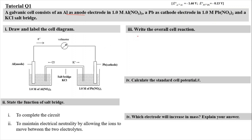For number three, we have to write the cell notation. In order to write the overall cell notation, we need to start with the half-cell. For aluminium at the anode, it will be oxidized to form Al³⁺ (aqueous), releasing 3 moles of electrons. Meanwhile, at the cathode, Pb²⁺ from the electrolyte will accept 2 electrons and become plumbum solid. This happens at the cathode.